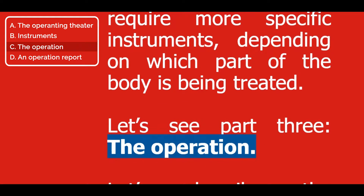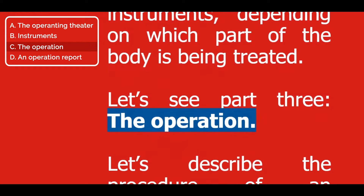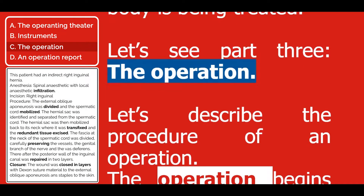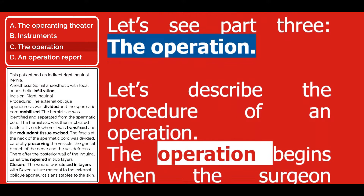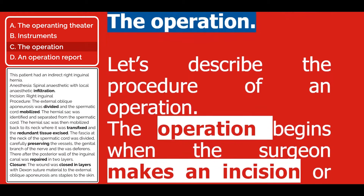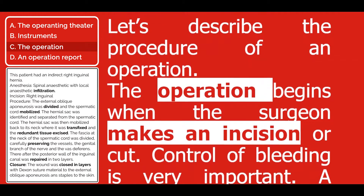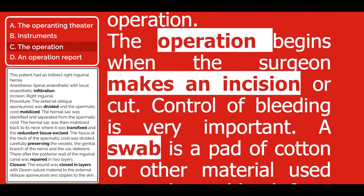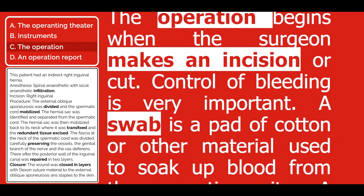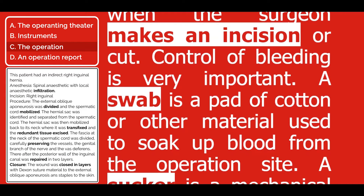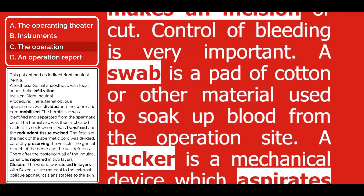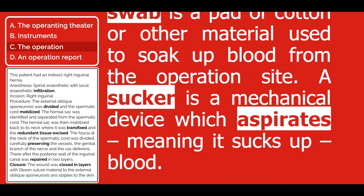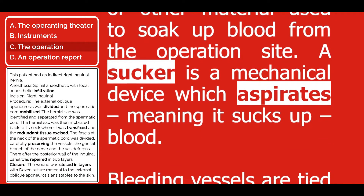Let's see part three, the operation. Let's describe the procedure of an operation. The operation begins when the surgeon makes an incision or cut. Control of bleeding is very important. A swab is a pad of cotton or other material used to soak up blood from the operation site. A sucker is a mechanical device which aspirates, meaning it sucks up, blood.